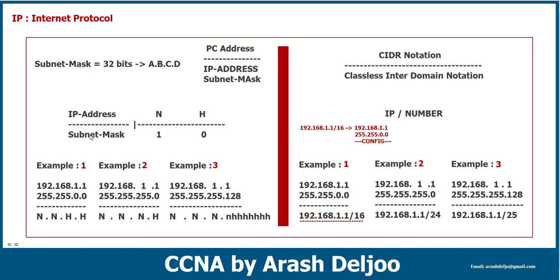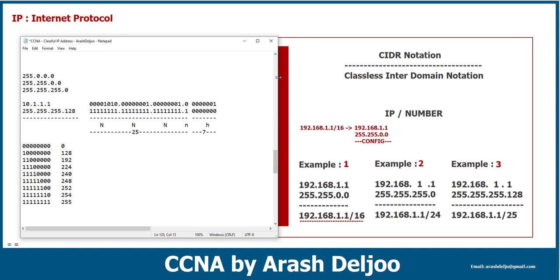This is another method of representing an IP address — CIDR notation. Both notations are the same. In most cases we use dotted decimal notation of the subnet mask, for example 255.255.0.0, when we are configuring. When we are talking about the subnet mask, we use CIDR notation or Classless Inter-Domain Routing notation, such as 192.168.1.1/16. You will learn about these features more because you will configure and talk about all of them many times in CCNA and future courses.